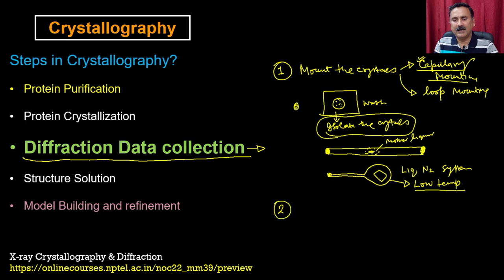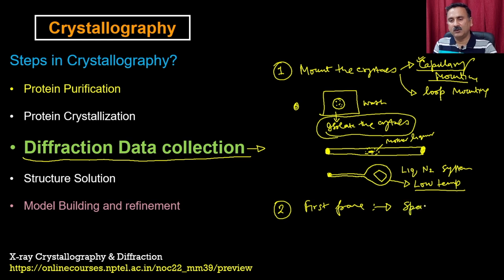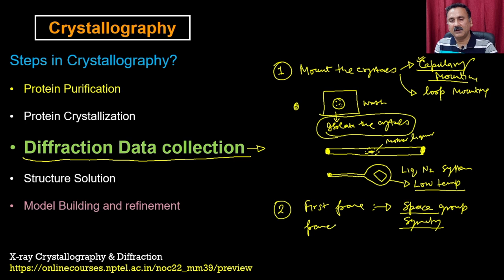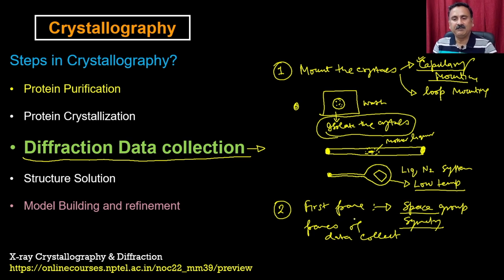In step two, you are actually going to collect the first frame. Once you collect the first frame, that will allow you to calculate the space group and it is also going to calculate the symmetry. Once you calculate the symmetry and the space group, it is actually going to tell you how many frames of data you are supposed to collect. You can imagine that if you have the crystal and if you have twofold symmetry, threefold symmetry, or fourfold symmetry, you can be able to collect the data accordingly.